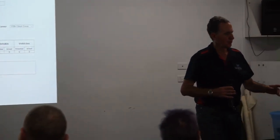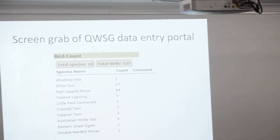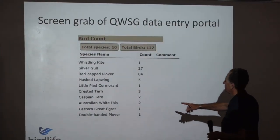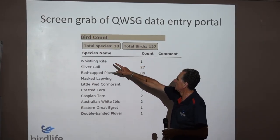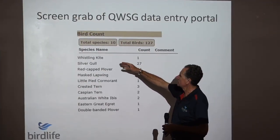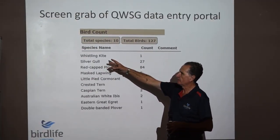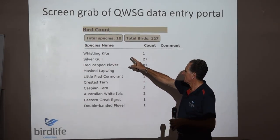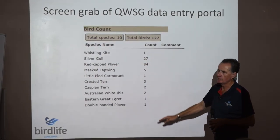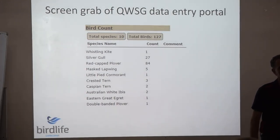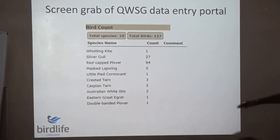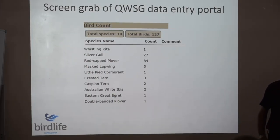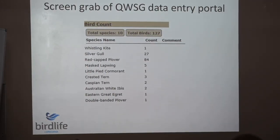Then in the birds counted section down the bottom, you can click on the box and start typing the name of the species. It will come up with that species, you select it, then put in the number of birds for that particular species. It generates a list of the number of species and the number of birds for that particular count.